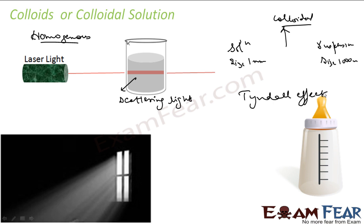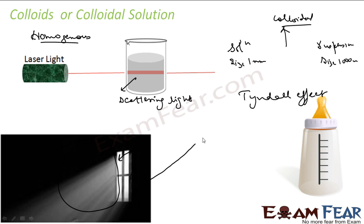The Tyndall effect is named after the scientist who discovered it. A good example is air — when you're in a dark room and light comes through a window or a hole, you can see the beam of light. This is because air is a colloidal solution and the light gets scattered, producing the Tyndall effect.